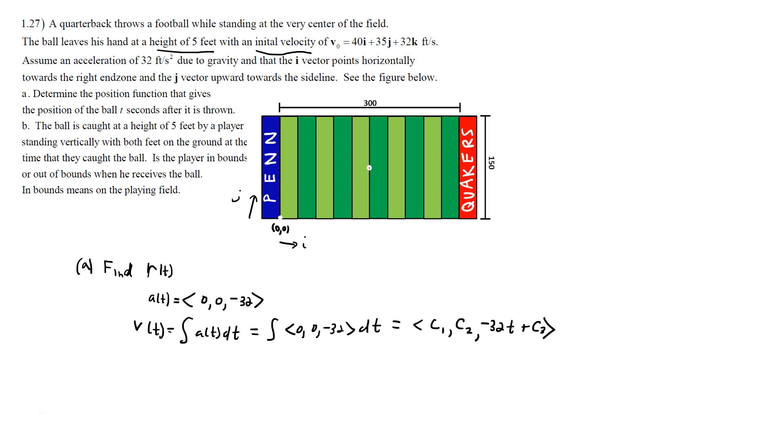So you then plug in 0. We know what at time T equals 0, we know the velocity is equal to 40, 35, 32. And so us plugging in 0 gives us C1, C2, C3. And so we know then exactly what those constants are.